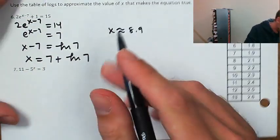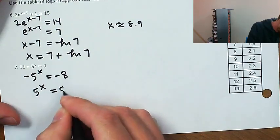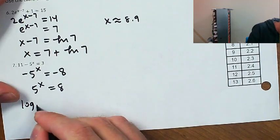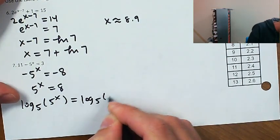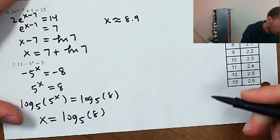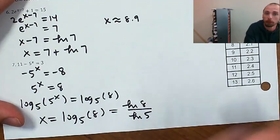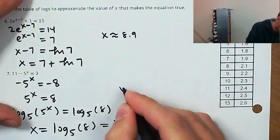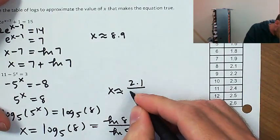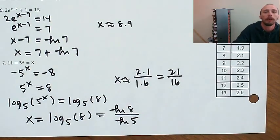Last problem: 11 minus 5 to the x equals 3. Subtract 11: negative 5 to the x equals negative 8. Divide both sides by negative 1: 5 to the x equals positive 8. Take a log with base 5 of both sides — x equals log base 5 of 8. That's an exact solution. For an approximation, use the change of base formula: natural log of 8 divided by natural log of 5, approximately 2.1 over 1.6, which is 21 over 16. That's all for Algebra 2 Quiz 9.4. Thanks for watching, hope this helped.